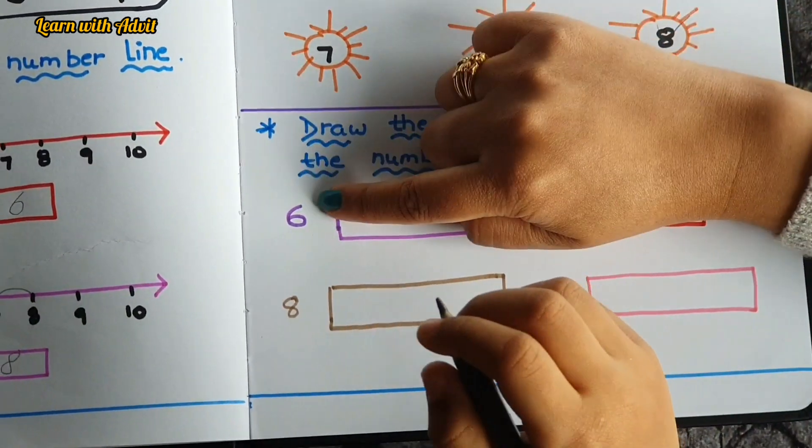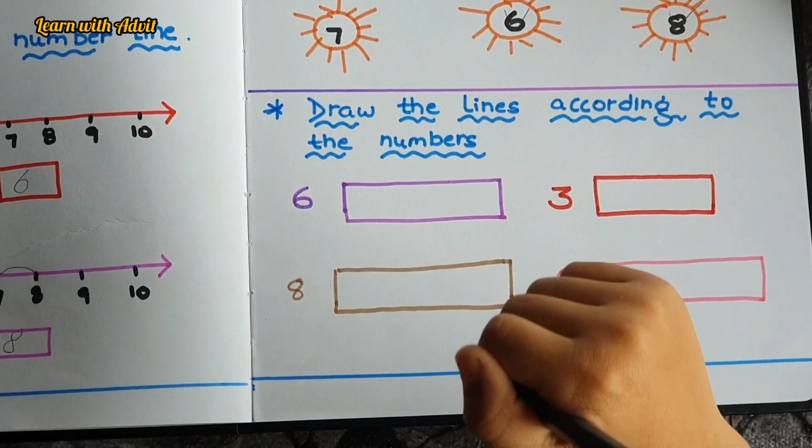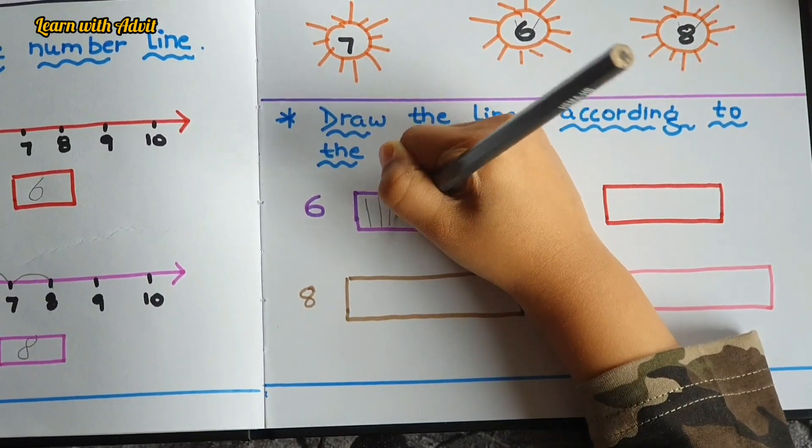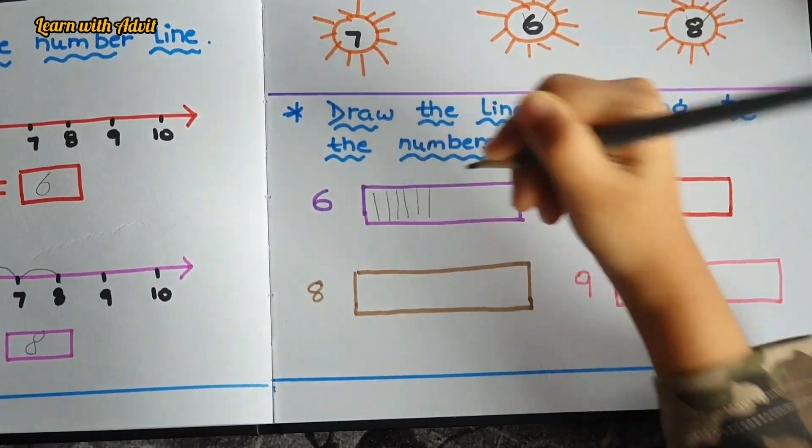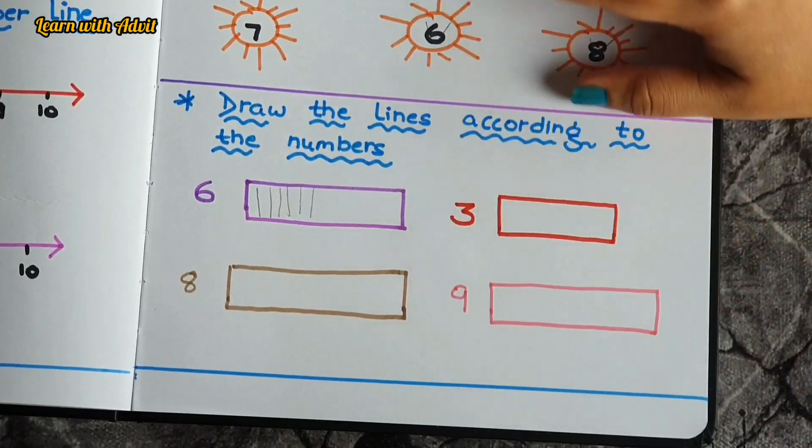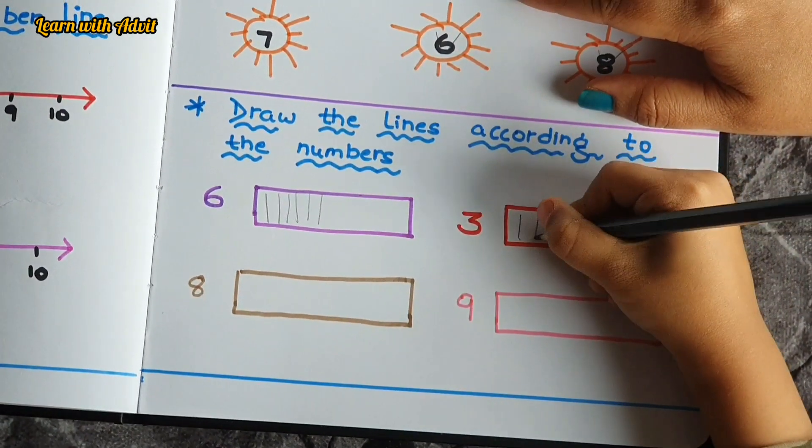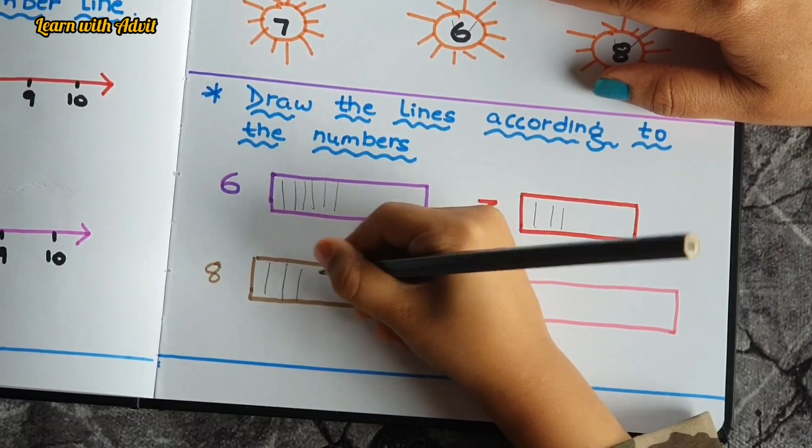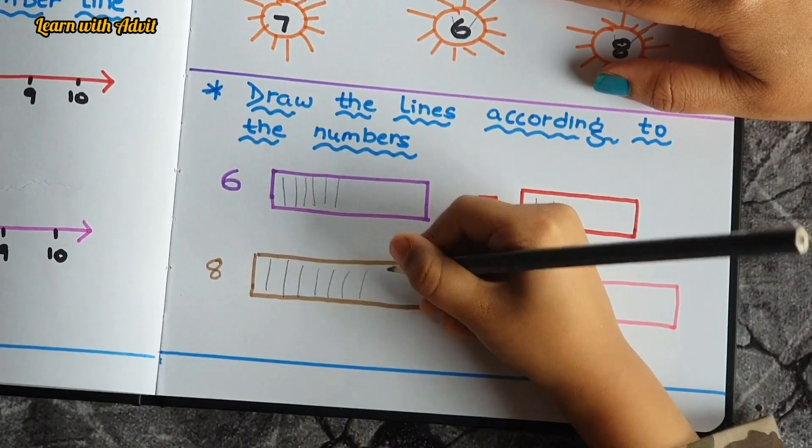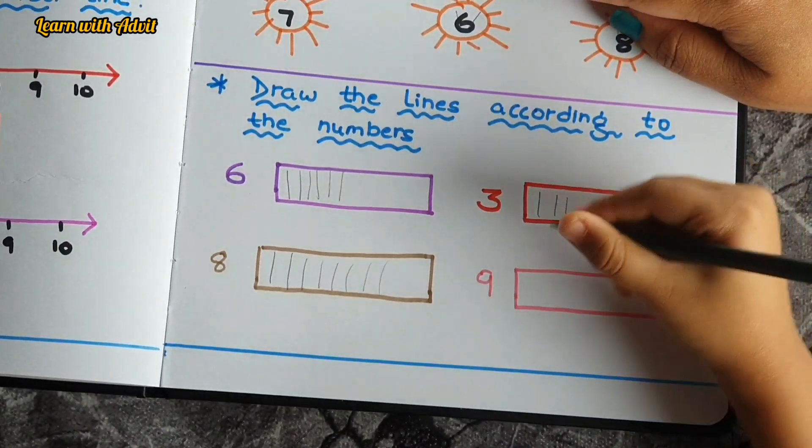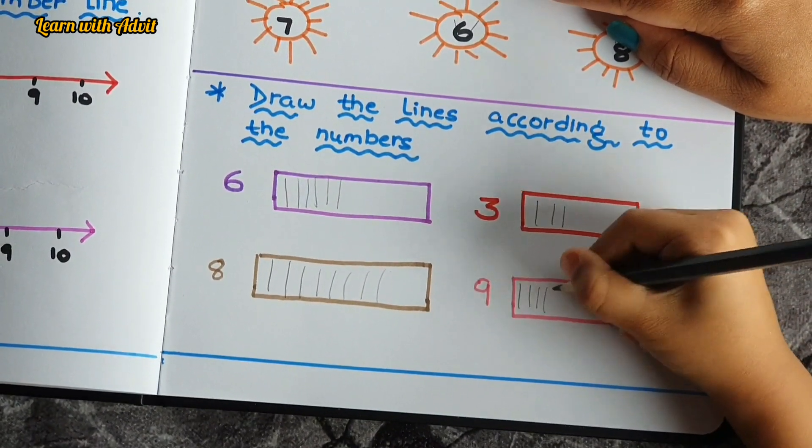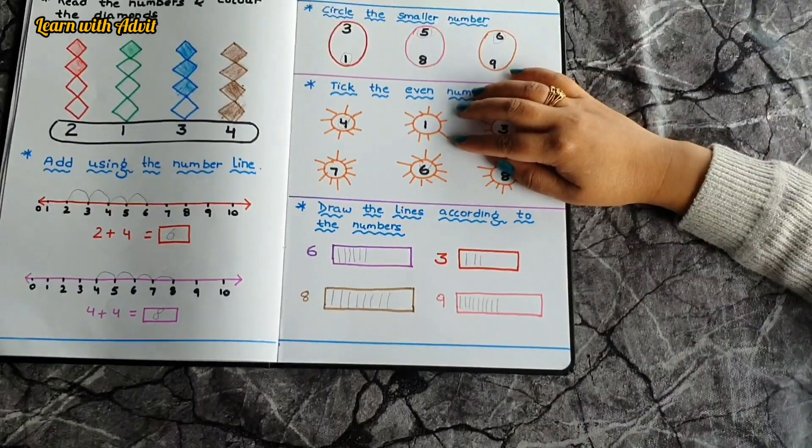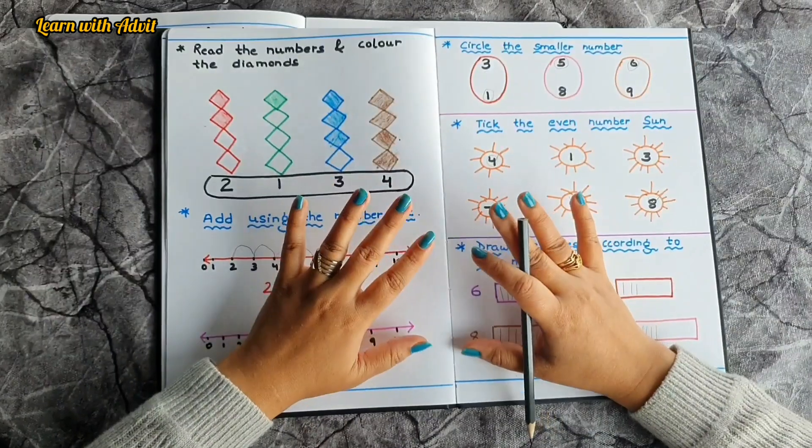Yeah, what you have to do is draw the lines according to the given number. Which number is this? That is 6. So draw the lines. 1, 2, 3, 4, 5, 6. Very good. Which number is this? 3. 1, 2, 3. Yes. Next, 8. 1, 2, 3, 4, 5, 6, 7, 8. Yes. Next, 1, 2, 3, 4, 5, 6, 7, 8, 9. Yes, you enjoy it?